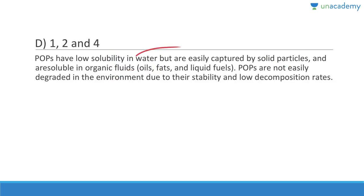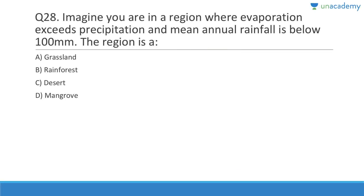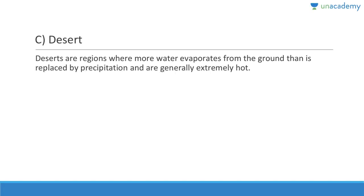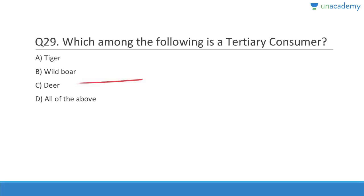Question twenty-eight: Imagine you are in a region where evaporation exceeds precipitation and mean annual rainfall is below 100 mm. The region is a desert. Answer is C. Deserts are regions where more water evaporates from the ground than is replaced by precipitation, and they are generally extremely hot. Question twenty-nine: Which among the following is the tertiary consumer? Primary consumers are herbivores, so deer and wild boar can't be there.